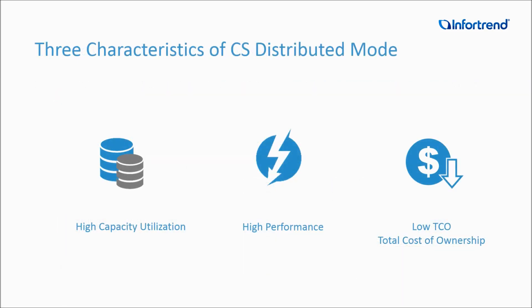From the previous introduction, you've learned that the scale-out Distributed Mode has the following three major characteristics: one, high capacity utilization; two, high performance; and three, low TCO. Let me introduce you to them one by one.